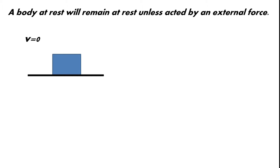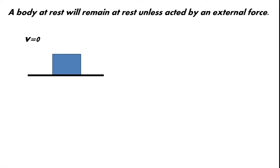Let's focus first on the statement that a body at rest will remain at rest unless acted upon by an external force. Here in the picture, we have a body with a mass sitting on a surface or floor. The body is at rest because its velocity is zero. According to the first law, it will remain at rest unless a force is exerted on it by an external object — for example, your hand pushing the box.